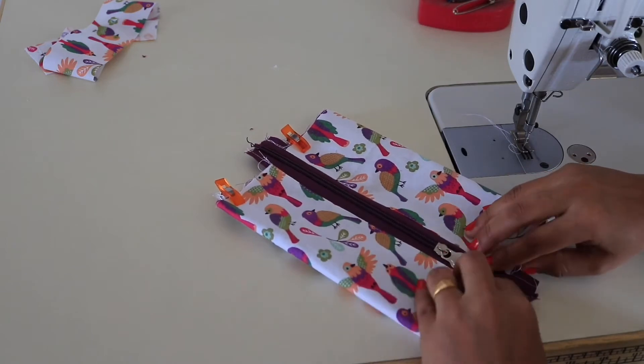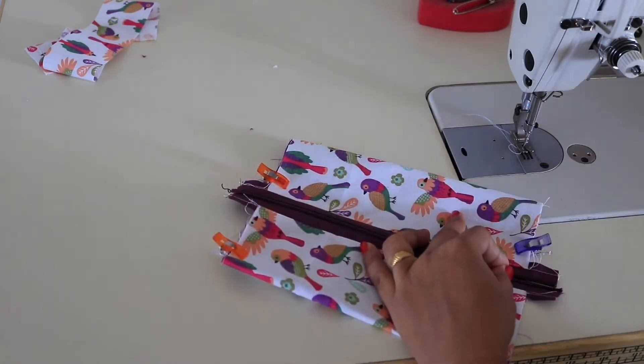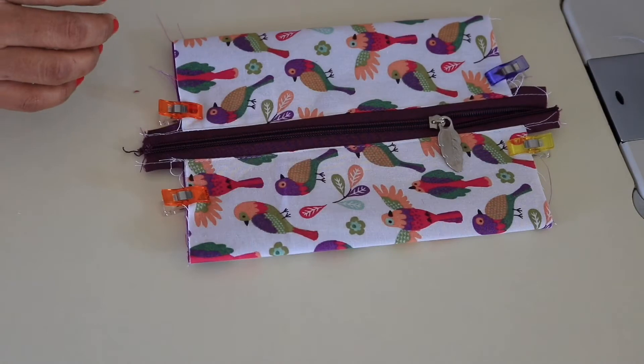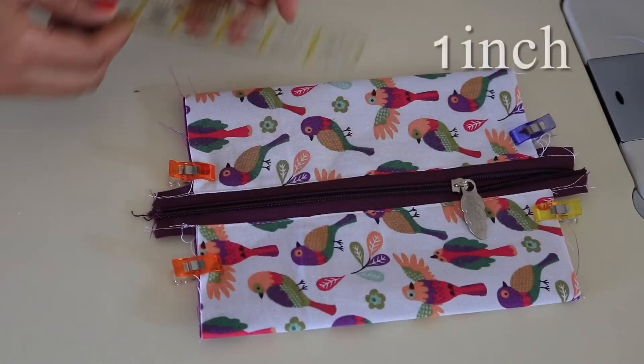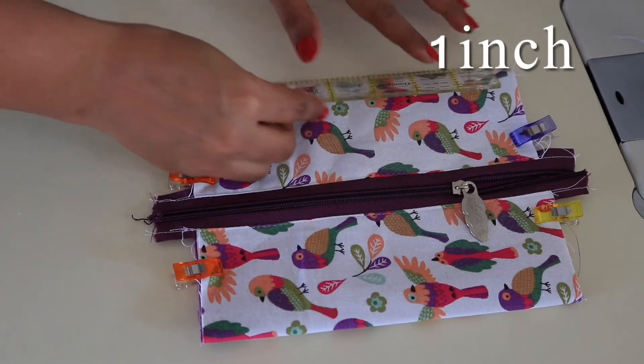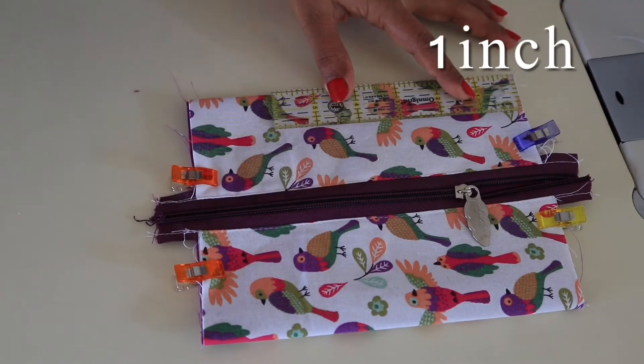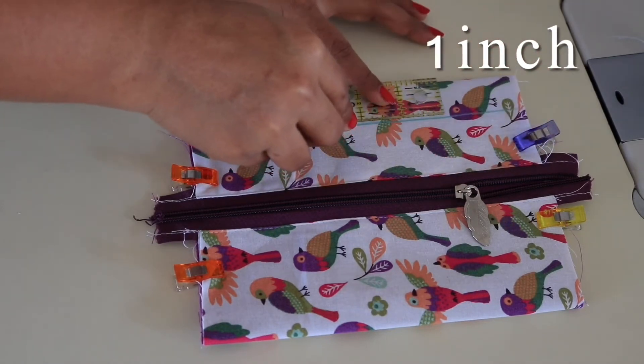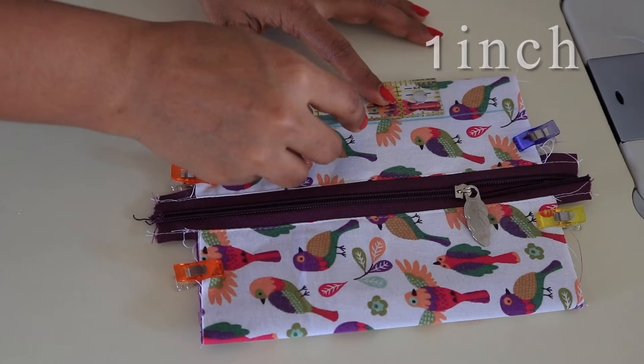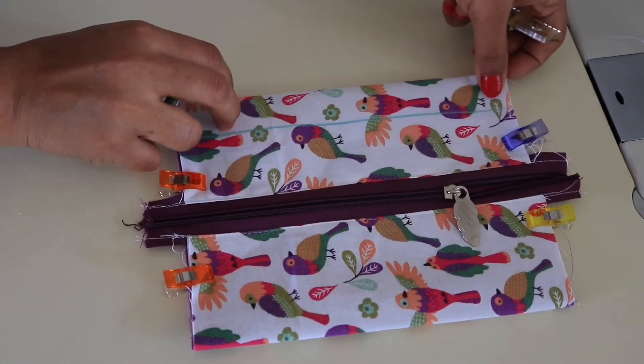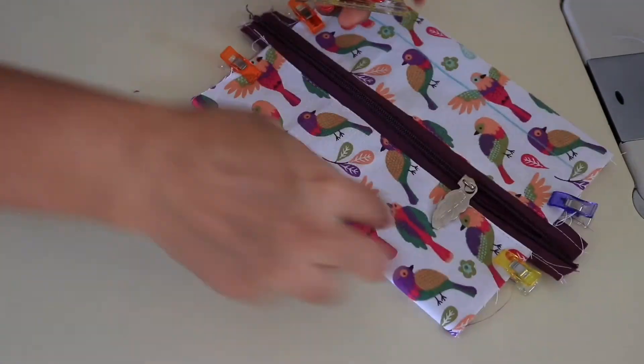After this, take your ruler and mark one inch above from this fold. Make a line all the way down. Make sure you use washable pen or chalk.